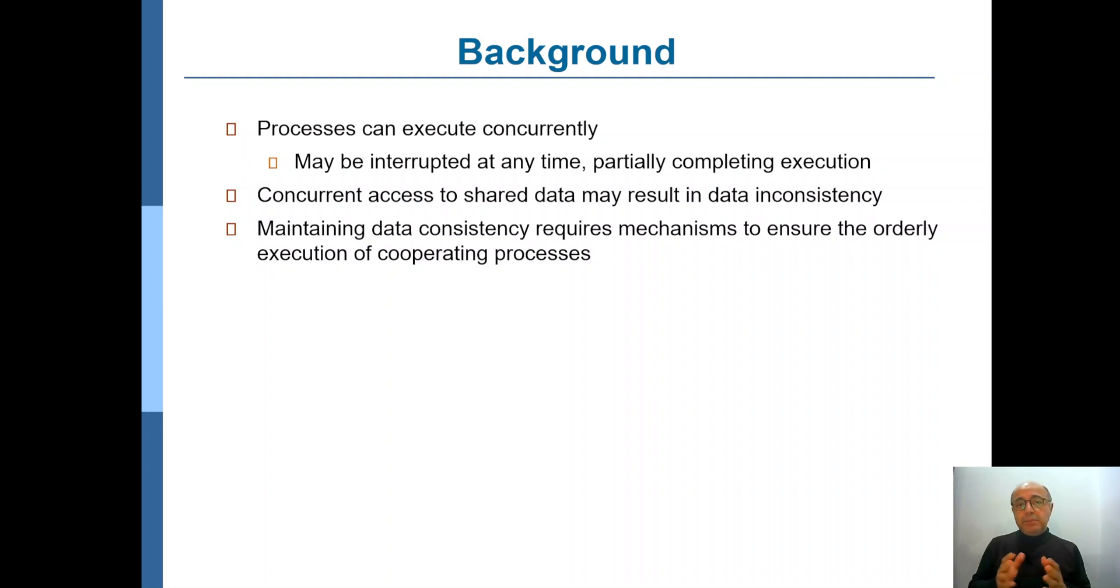If these processes p1, p2, p3 are completely independent—that means the variables they're using, the files they're using, if they're not shared—then it's not important in which order they are executing. It's just a performance problem. However, if these processes are sharing some data structures like variables, arrays, or even files, or doing inter-process communication or signaling to each other, it is important in which order they're executing.